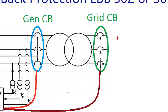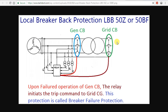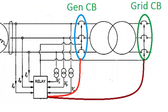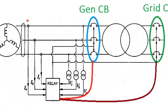This is what we call Local Breaker Back-Up Protection, because the generator breaker is open. If we call it the generator breaker, it will be better to refer to it as the alternator. So if you call it the relay, you will never have any feedback.